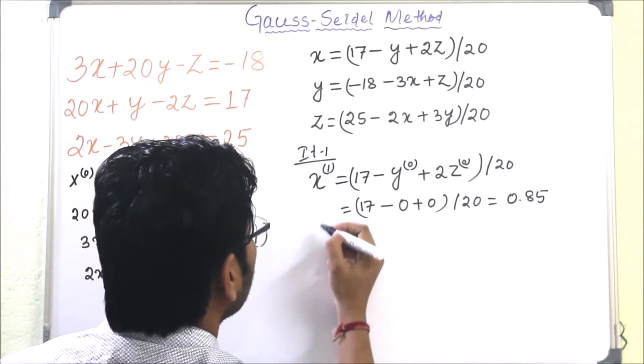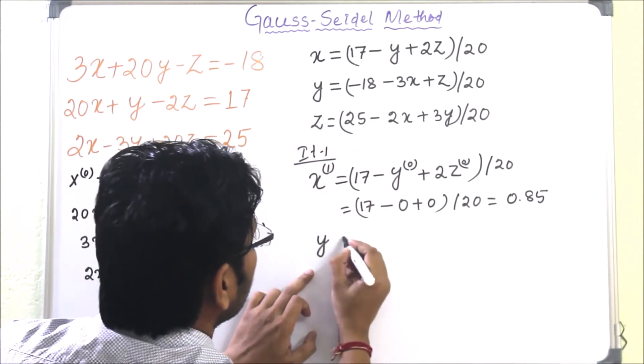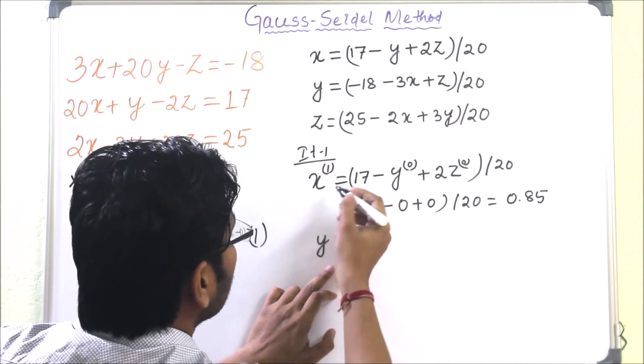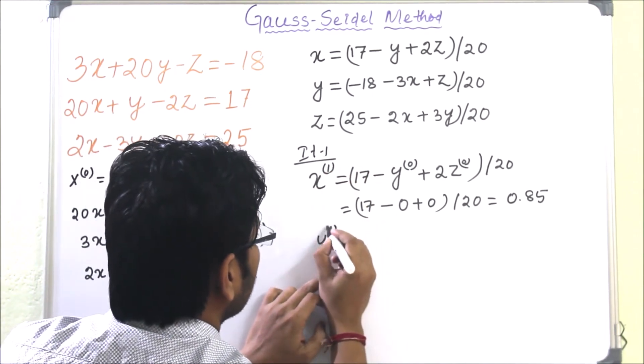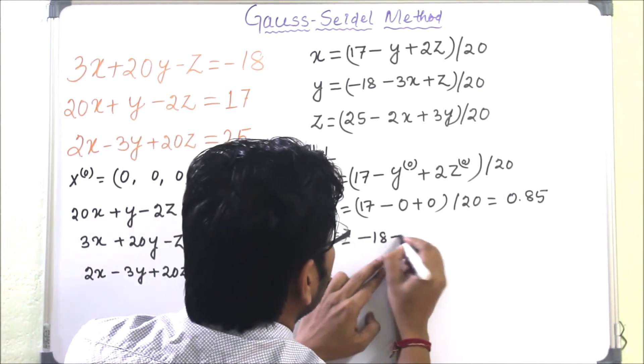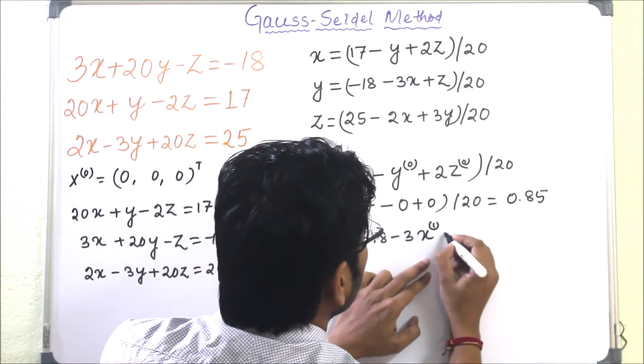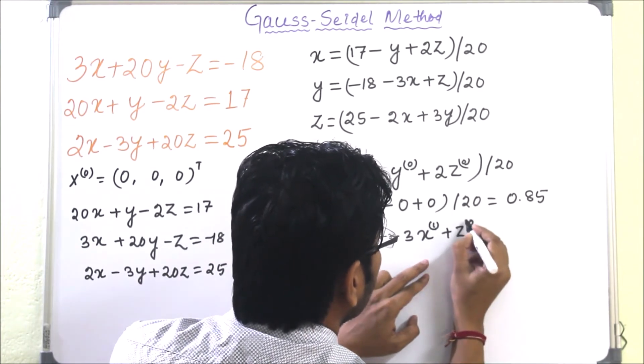Now next is Y. So Y1 will be what? Here we have to use X1. So Y1 will be (minus 18 minus 3 times X1 plus Z0) divided by 20, which equals minus 1.0275.